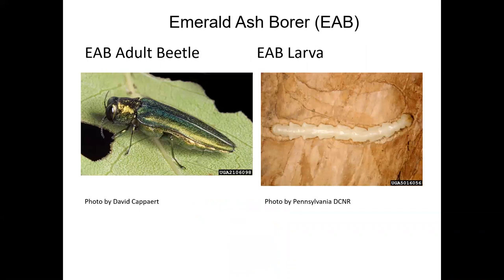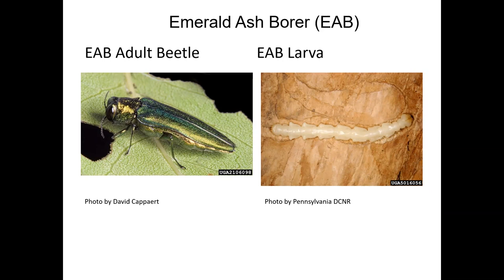I'm sure all of you have heard of the emerald ash borer. This is an invasive pest that was accidentally introduced to the United States from Asia. Pretty soon here in the spring, the adult emerald ash borer beetles will be emerging from ash trees, feeding on ash leaves, and laying eggs on the bark of ash trees. When the new larvae hatch from those eggs, they'll tunnel under the bark and begin feeding just beneath the bark of the tree.